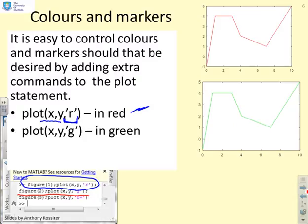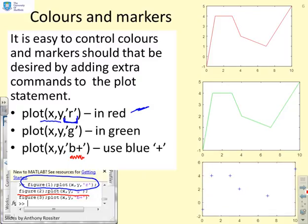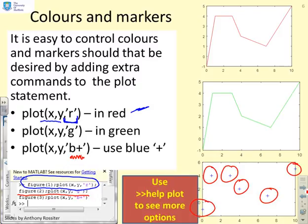For the final option, plot(x, y, 'b+') uses blue and marks points with plus signs rather than a line. So in figure 3 you'll see pluses — no lines joining them, because you've told MATLAB to mark points with pluses, not with a line. If you want to see all available options, type 'help plot' and it will give you a quick list of the different colours and marker types you can use.